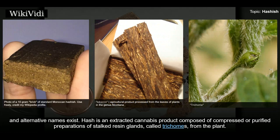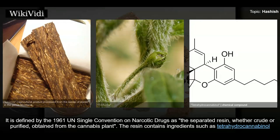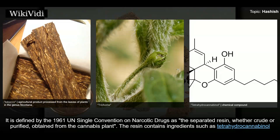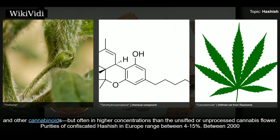Hash is an extracted cannabis product composed of compressed or purified preparations of stalked resin glands called trichomes from the plant. It is defined by the 1961 UN Single Convention on Narcotic Drugs as the separated resin, whether crude or purified, obtained from the cannabis plant. The resin contains ingredients such as tetrahydrocannabinol and other cannabinoids, often in higher concentrations than unprocessed cannabis flower.